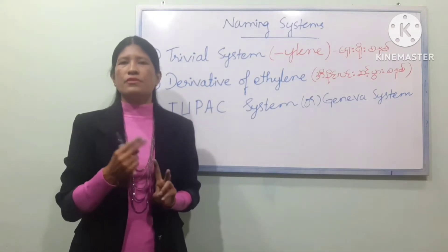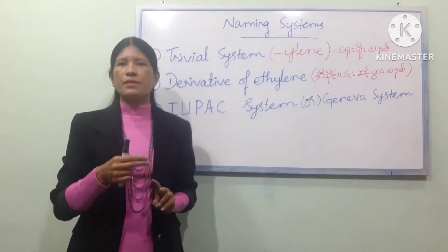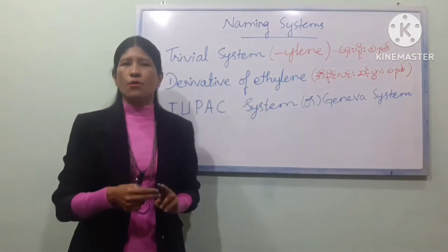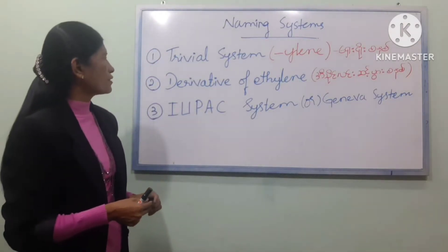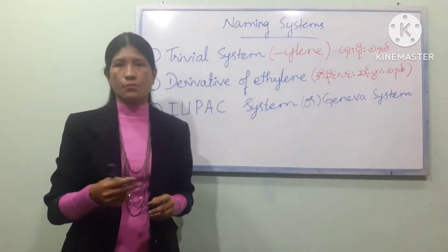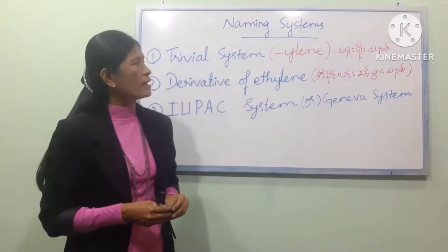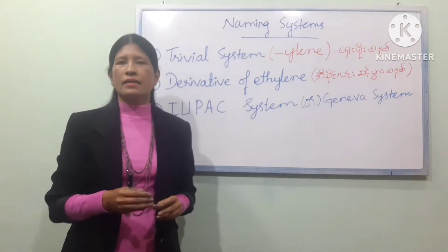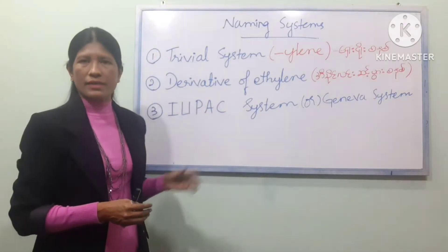For example, we have ethylene, propylene, and butylene as common names. Number 2 is the derivatives system from Italian nomenclature — this system uses the suffix -ENE and the same carbon-count prefixes.